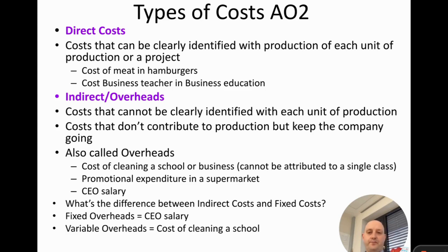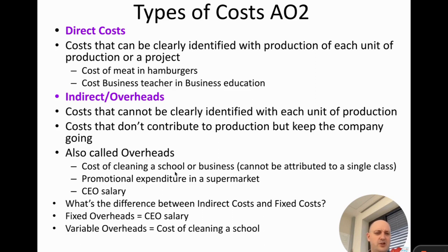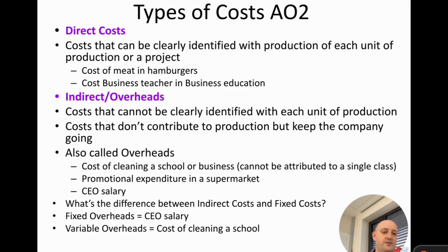Indirect costs, sometimes called overheads, are costs which cannot clearly be identified with production — they don't contribute directly to production but keep the company going. For example, the cost of cleaning a school cannot be attributed to any single classroom or class. Similarly, a supermarket's TV advertising campaign or a bus-side advertisement cannot be associated with any one product they sell, so it goes into overheads.